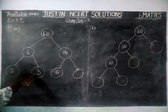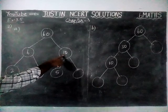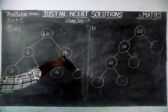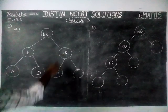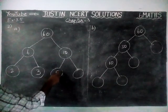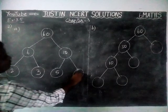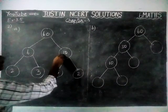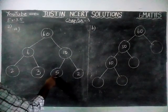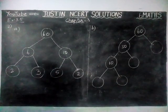Next, we are going to separate 10. 10 is not a prime number, so we are going to separate it. 5 is one number — 5 twos are 10. 5 is a prime number and 2 is also a prime number.